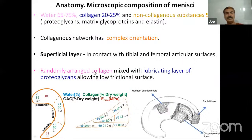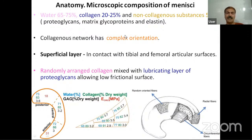The microanatomy: the menisci are composed of water (65–75%), collagen (20–25%), and non-collagenous substances — proteoglycans, glycoproteins, and elastin — comprising 5%. The collagen arrangement is complex, organized in three layers: a superficial layer, a lamellar layer, and a deep central layer. The superficial layer contacts the tibial and femoral articular surfaces; its collagen fibers are randomly arranged and mixed with a lubricating layer of proteoglycans, providing a low-friction surface. Beneath this lies the lamellar layer with external radially oriented fibers and internal fibers intersecting at various angles, creating a mesh. Vertical fibers project into the central layer, securing them together and transmitting force between the two.